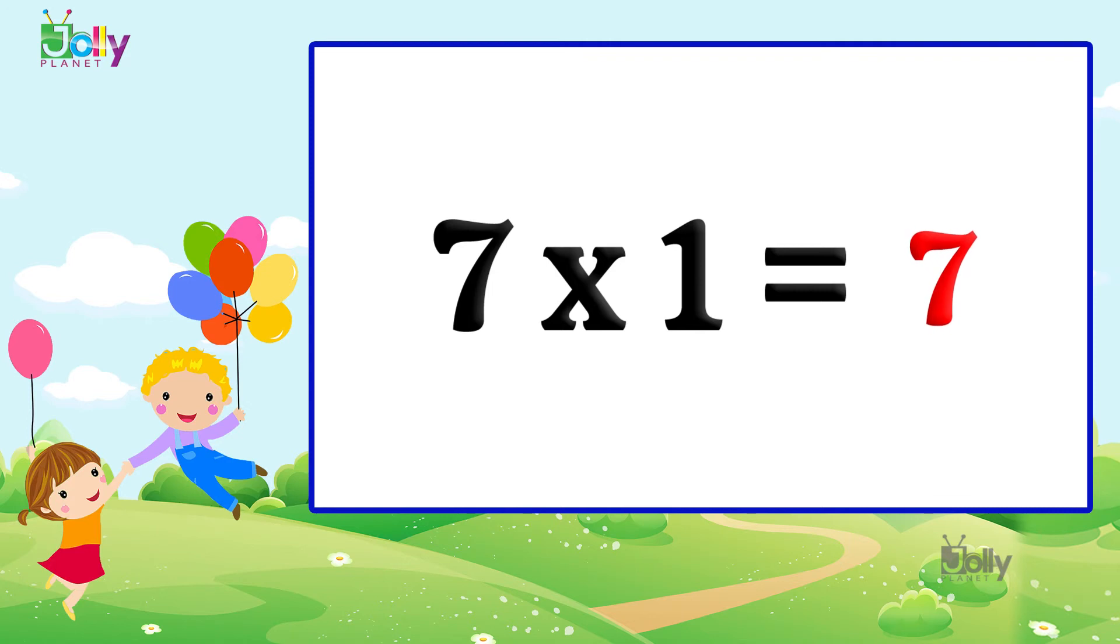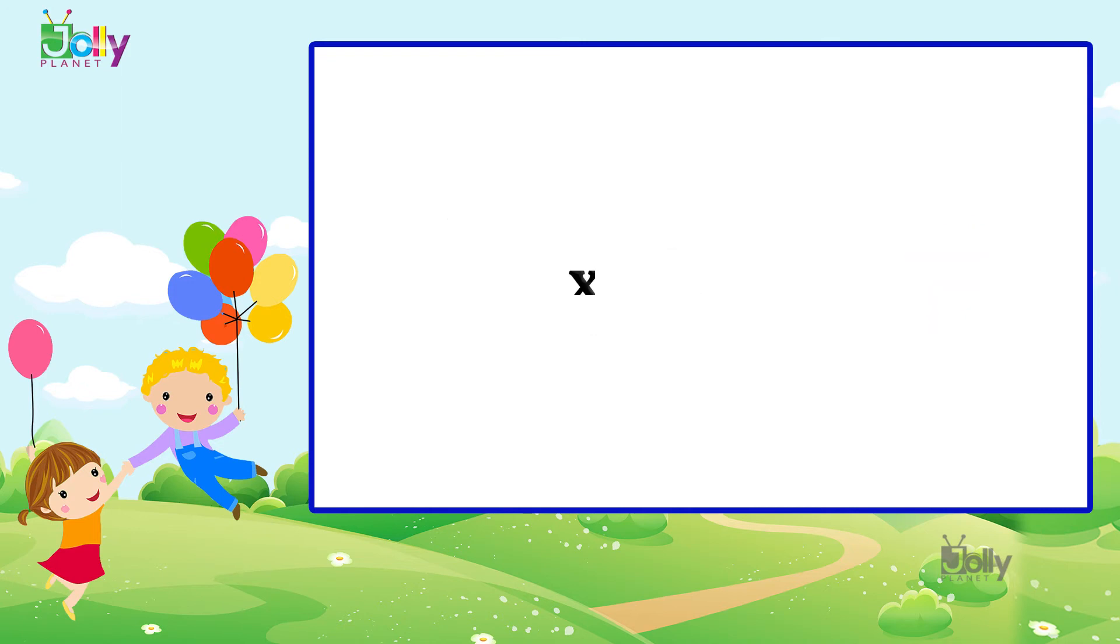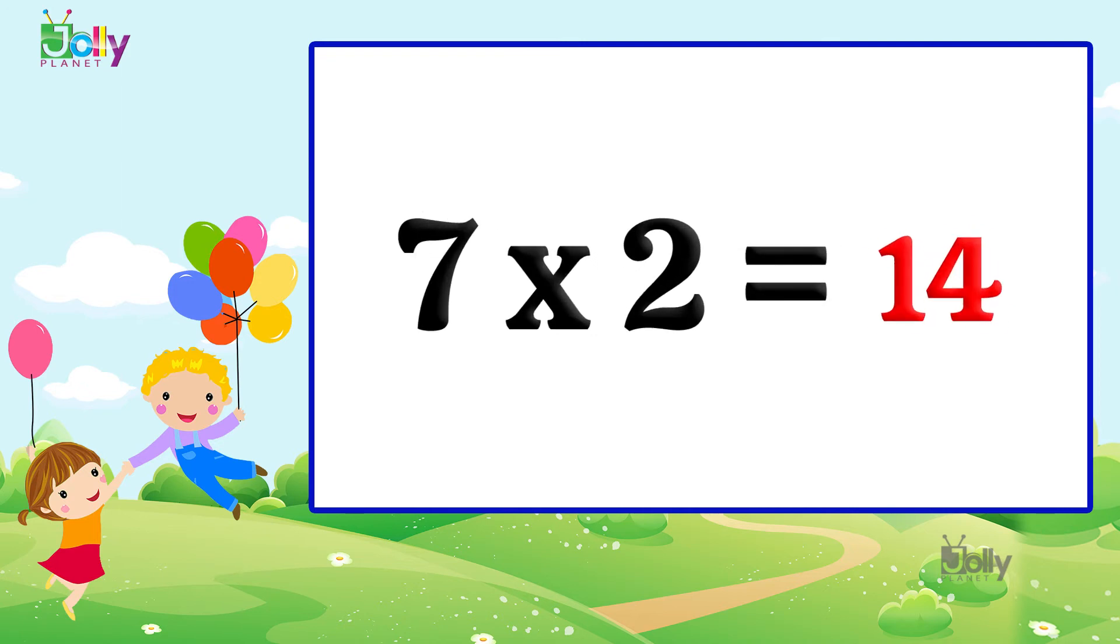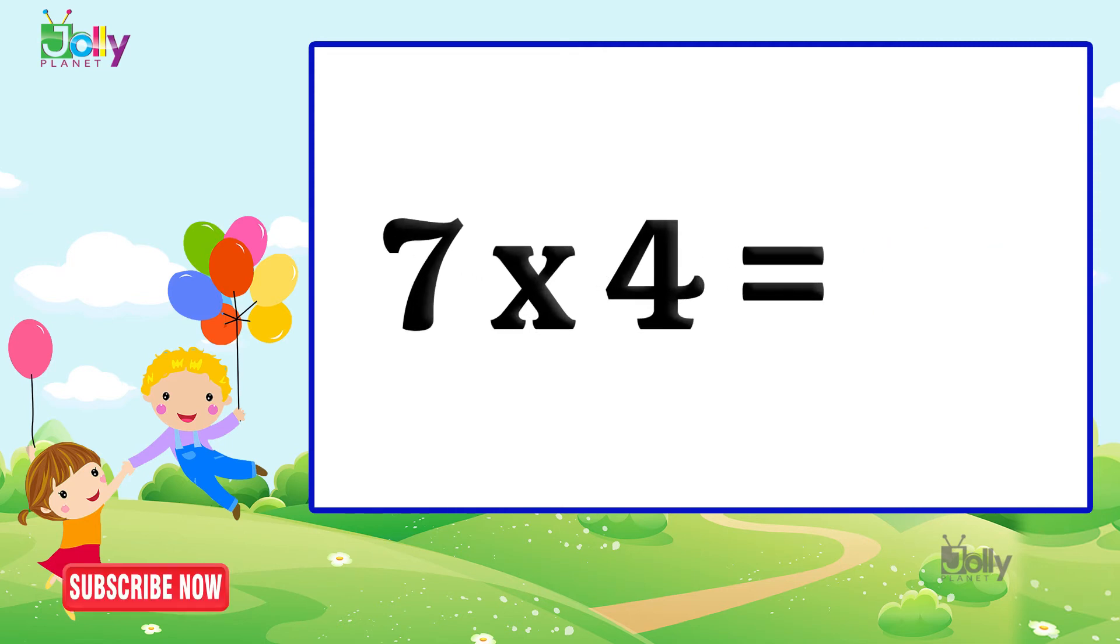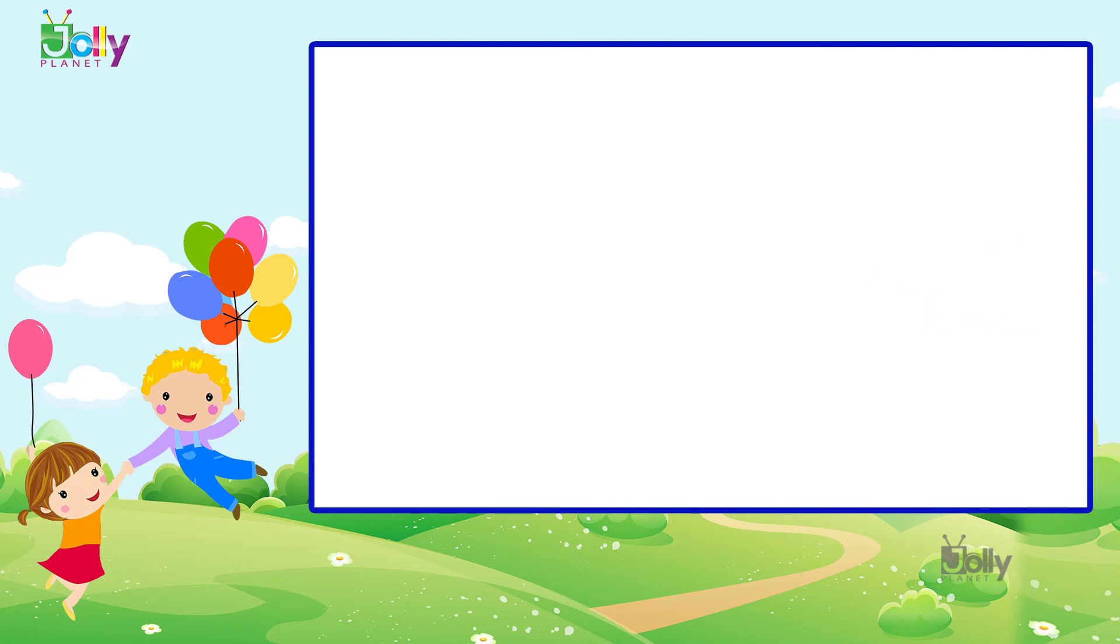Seven ones are 7. Seven ones are 7. Seven twos are 14. Seven twos are 14. Seven threes are 21. Seven threes are 21. Seven fours are 28. Seven fours are 28. Seven fives are 35.